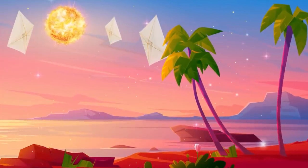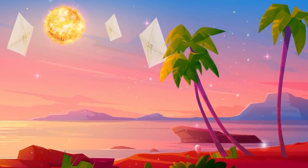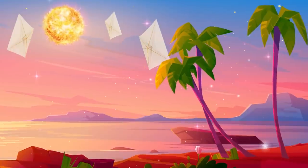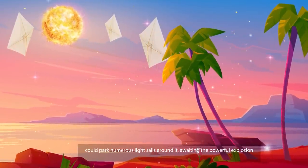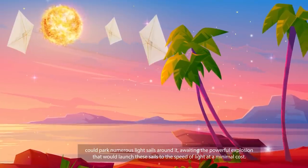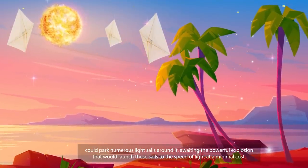Alternatively, a civilization that happens to reside near a massive star such as Betelgeuse or Eta Carinae could park numerous light sails around it, awaiting the powerful explosion that would launch these sails to the speed of light at a minimal cost.